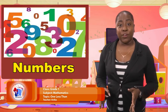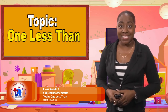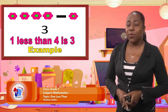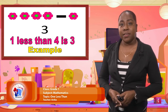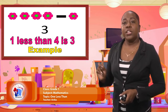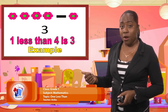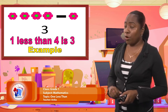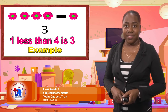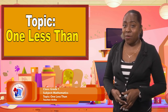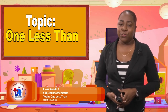Welcome back. So today we're going to be looking at numbers. However, we're going to be looking at one less than. So let me give you an example. If you look here on the screen we have four flowers and if I take away one flower I'm going to be left with three. Therefore one less than four would be equal to three. We're looking at one less than. Alright? So keep that in mind. Let's go through our lessons.